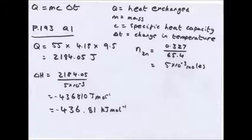Moles of zinc: mass = 0.327 g, molar mass of zinc = 65.4, so moles = 0.327 ÷ 65.4 = 5 × 10⁻³ mol. Then ΔH = q ÷ n = 2184.05 ÷ (5 × 10⁻³) = −436,810 J/mol. Divide by 1000 to get kilojoules: ΔH = −436.81 kJ/mol.